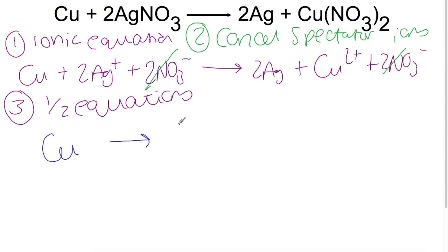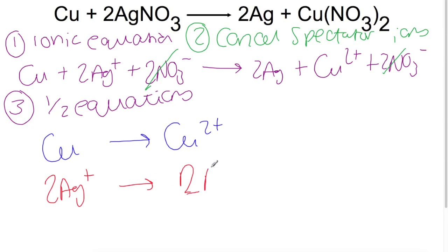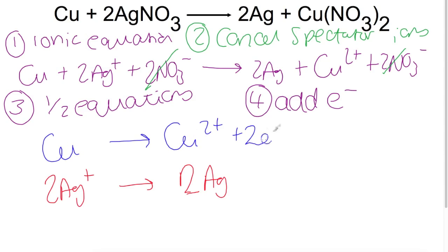Starting with copper: copper becomes Cu²⁺, and then silver ions become silver atoms. Step four is to add in electrons to balance the charge. Copper has no charge on the left and a two-plus charge on the right, which means copper is losing two electrons. These are transferred to the silver ions to form silver atoms. Looking at page 12 of the data book, copper is higher up on the electrochemical series than silver, so the copper equation gets flipped to form the oxidation equation, while the silver equation stays as the reduction.